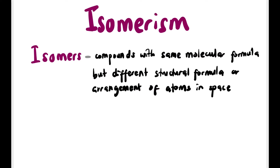Now let's talk about isomerism — section 1.5. Isomers are compounds with the same molecular formula but different structural formula or arrangement of atoms in space.